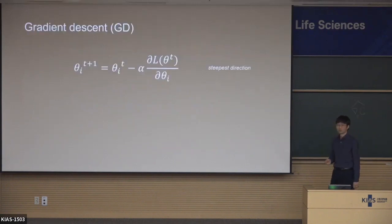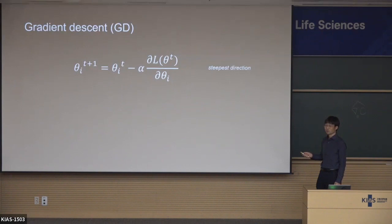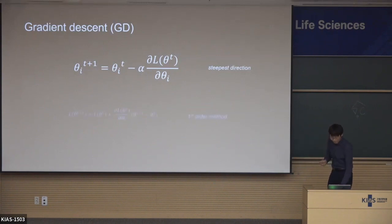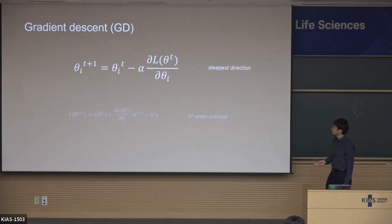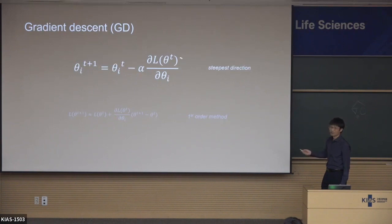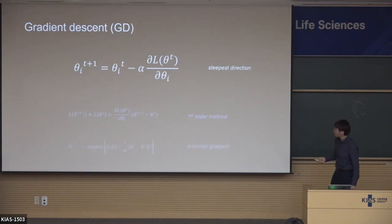You heard about gradient descent from Professor Mehta last week. We have an objective function L, a loss function, which has a parameter theta. Using gradient descent, we update theta following the steepest direction. This is a first-order method. If you have a Taylor expansion of this loss function up to first order, and you follow this direction — putting theta_{t+1} minus theta_t — then plugging this in, you are sure that your next loss should decrease.